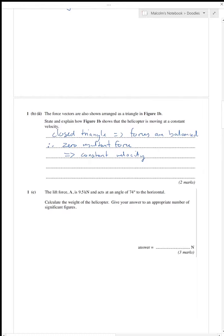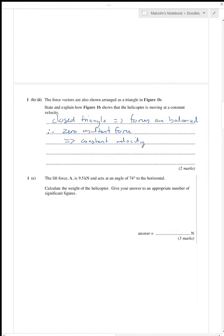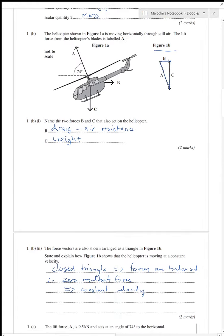We're given the size of the lift force, 9.5 kilonewtons. It acts at 74 degrees. Calculate the weight of the helicopter. If we go back to the triangle, we can see that the vertical component of A must be the same size as C. So this is the vertical component of A.